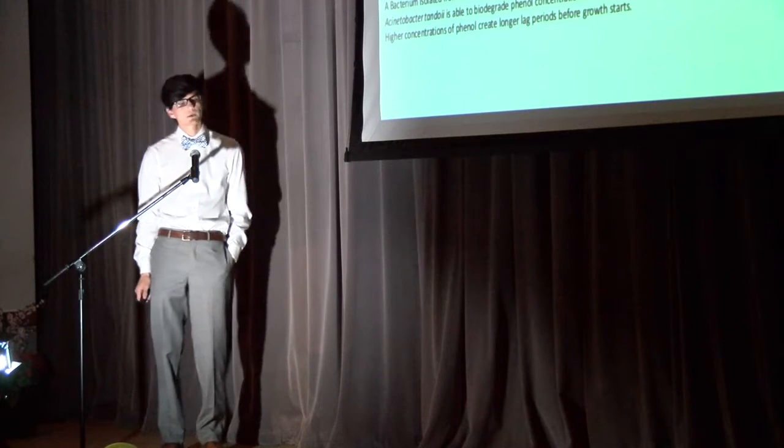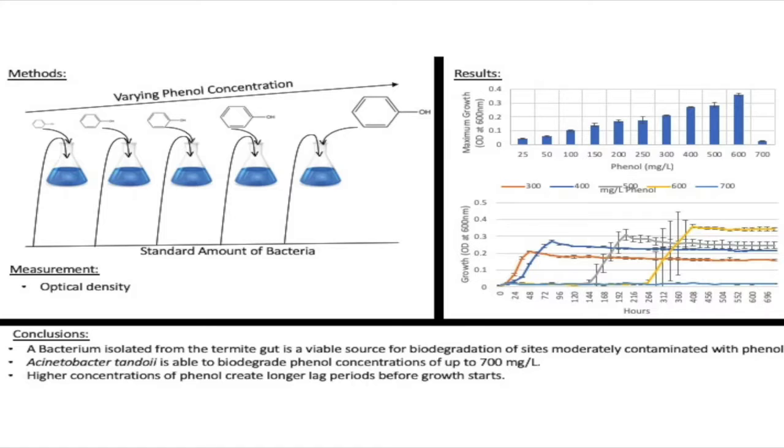In my experiment, what I did was I made a standardized media with the only source of food for the bacteria being phenol, and then I varied the phenol concentration. As you can see, in trial one I had a little bit of phenol, in trial five I had a lot of phenol.